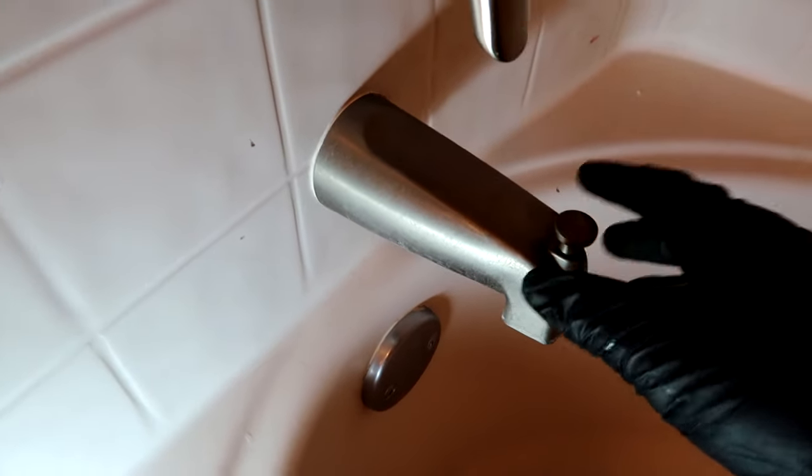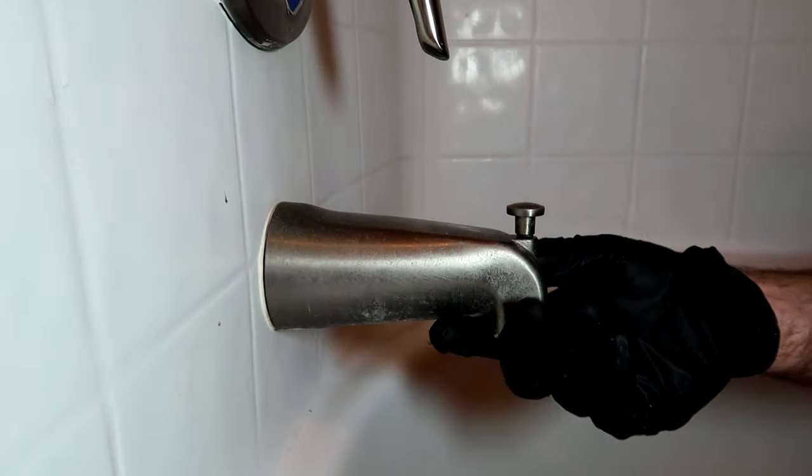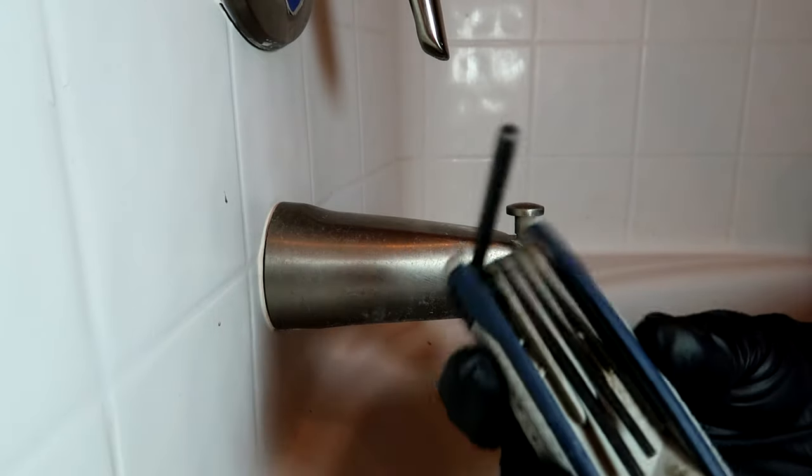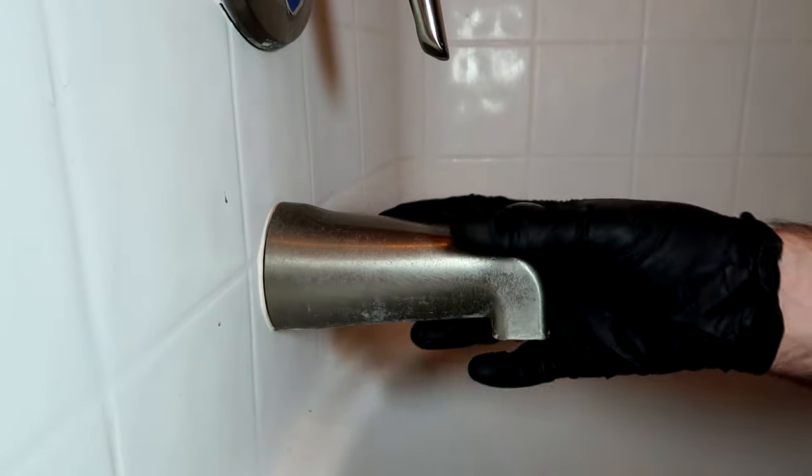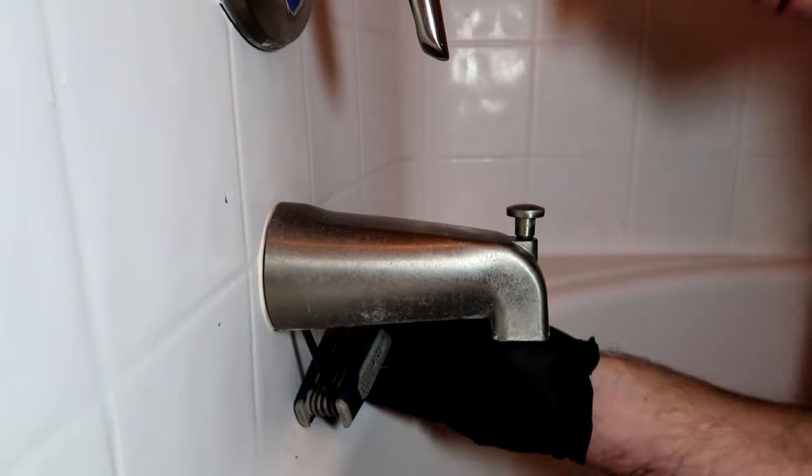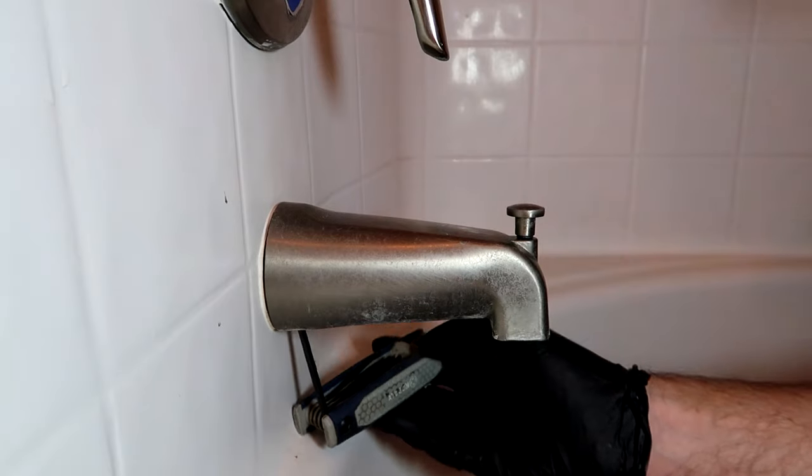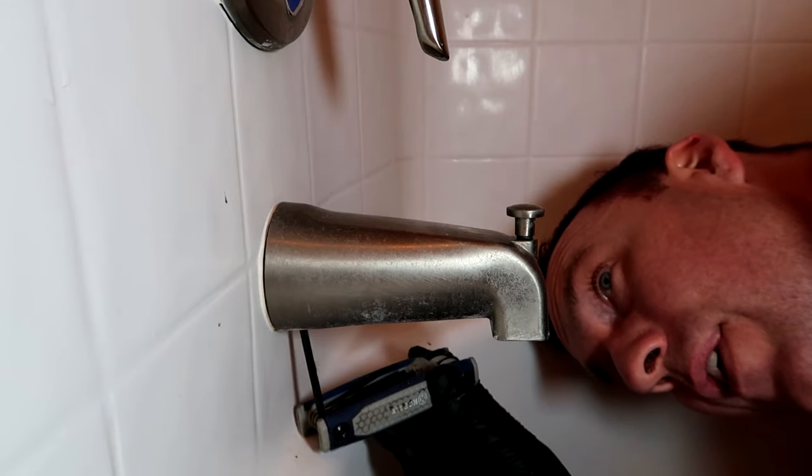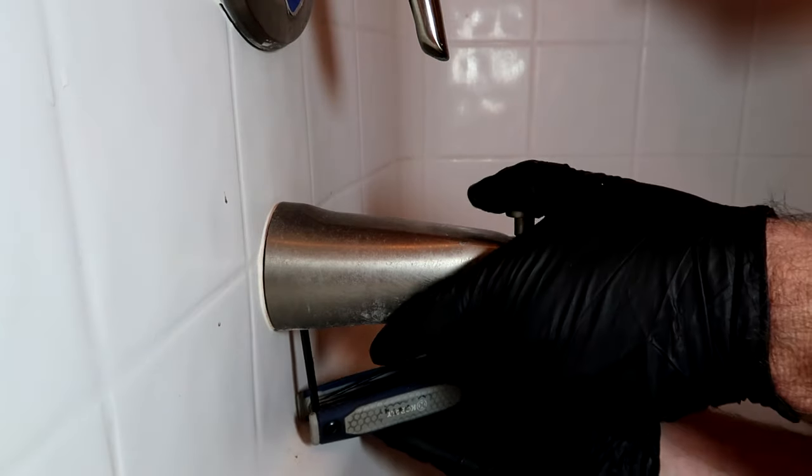I'm gonna pull the old tub spout off. This has an allen wrench screw underneath it. If yours doesn't have an allen screw, it probably twists off—lefty loosey. I'm finally able to film something now that everybody's home due to the beer virus.